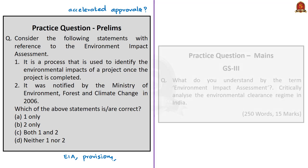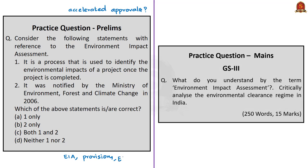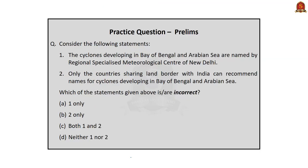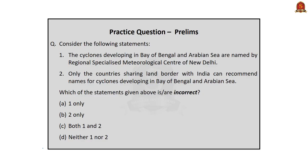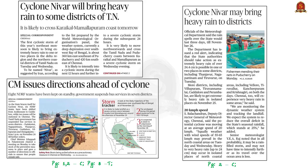With this, we'll move on to the next news. This news article talks about a cyclone in the Bay of Bengal. Yesterday, we discussed how a tropical cyclone develops, and it was said that a depression was brewing in the Bay of Bengal and may turn into a cyclone in the next two days.